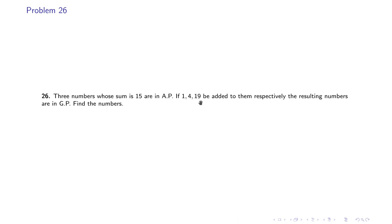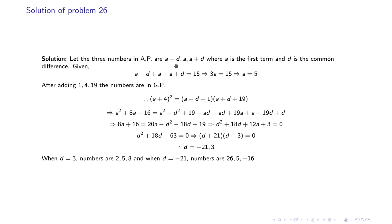Problem 26: Three numbers whose sum is 15 are in AP. If 1, 4, and 19 are added to them respectively, the resulting numbers are in GP. We let the AP numbers be a−d, a, a+d. Their sum gives 3a = 15, so a = 5. After adding, the GP condition requires (a+4)² = (a−d+1)(a+d+19). Solving gives d = 3 or d = −21. When d = 3 the numbers are 2, 5, 8; when d = −21 the numbers are 26, 5, −16.